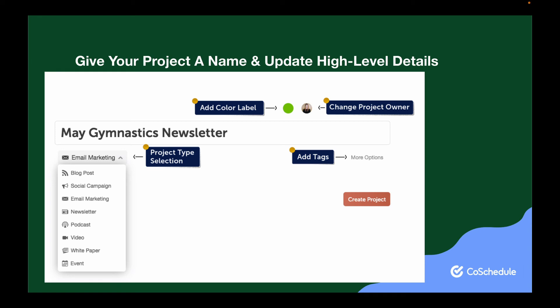You can also assign a color label, project owner, and tags to your project to add more details as needed. Another benefit of customizing this metadata on each project is that you can create saved, filtered views of your calendar using color labels, project owners, tags, and project types. You'll learn how to do this in a future video.